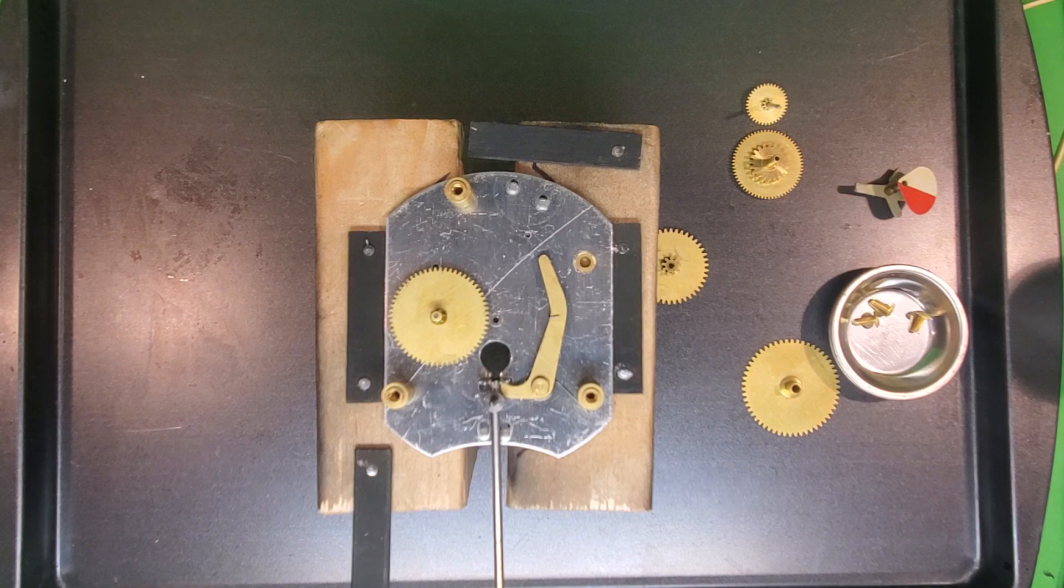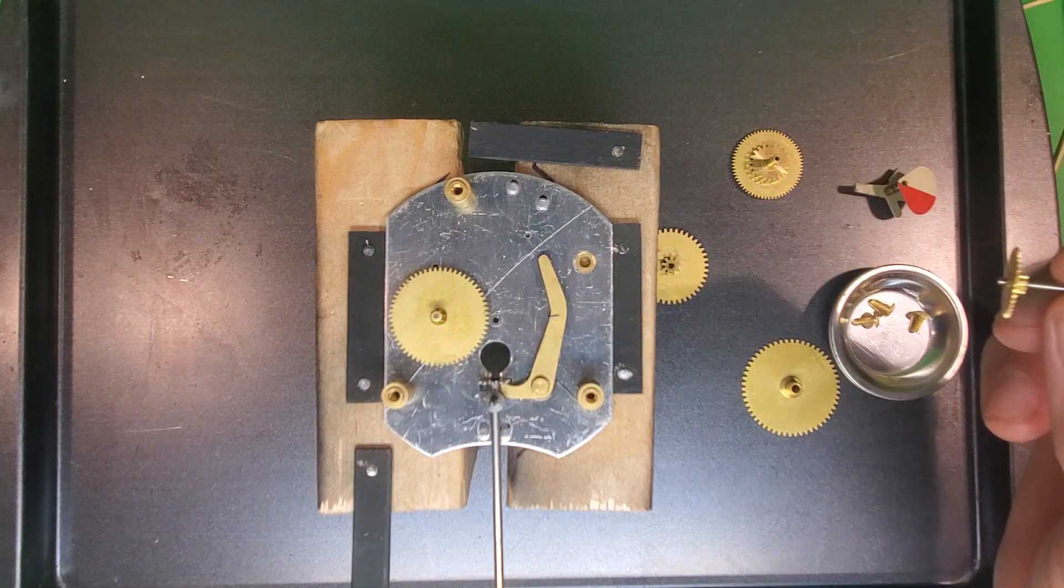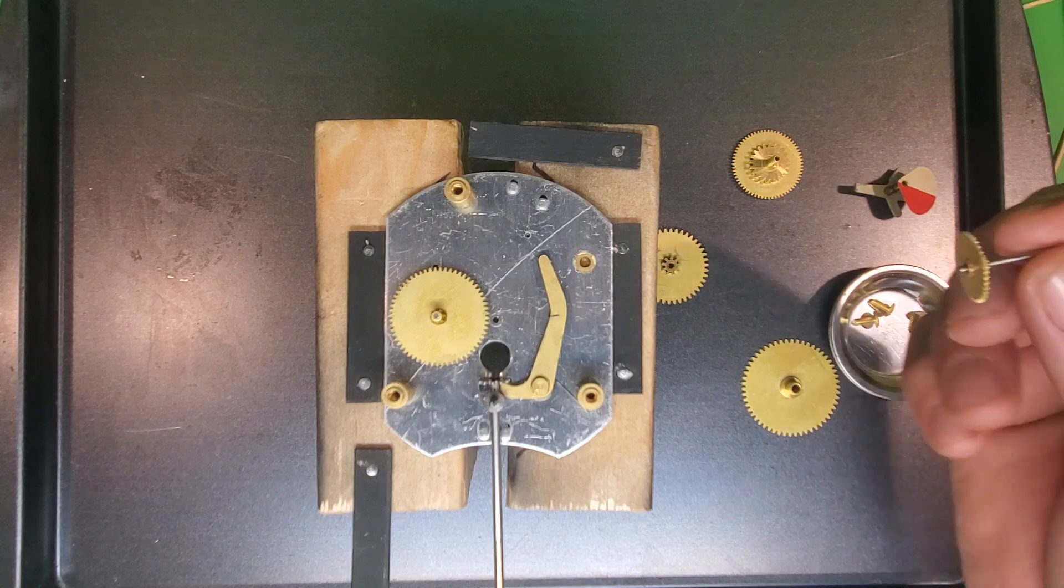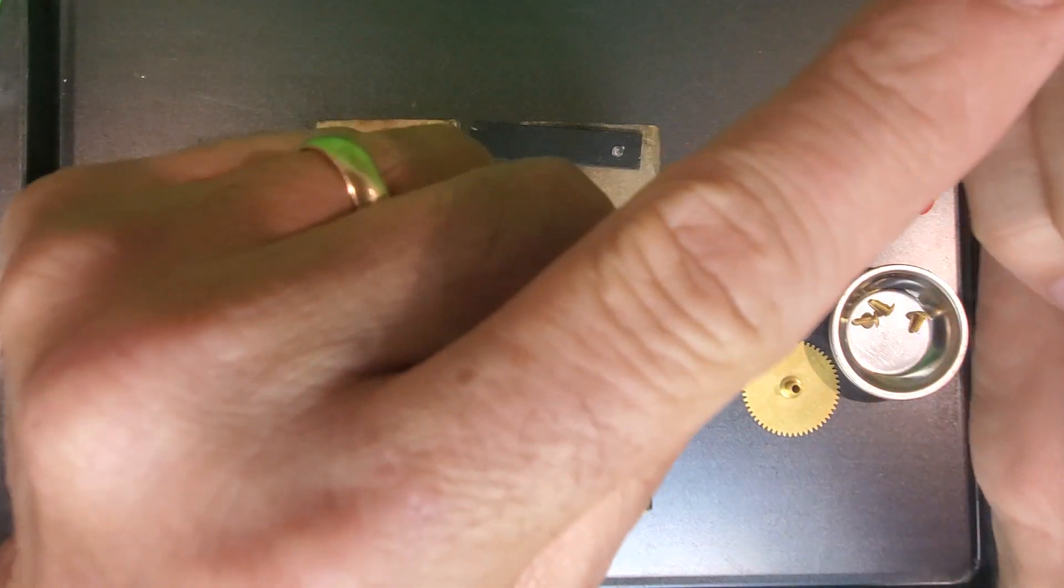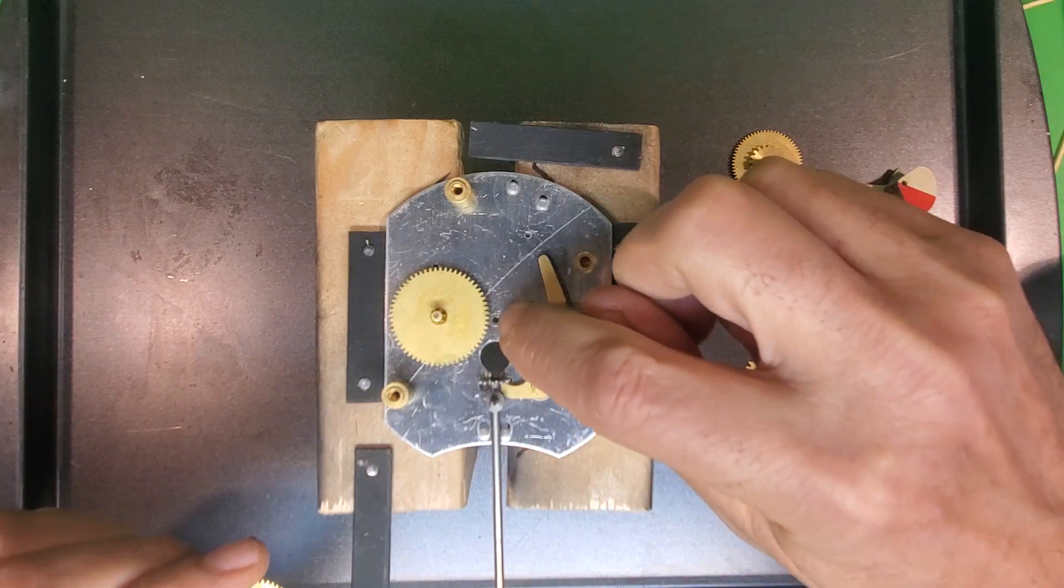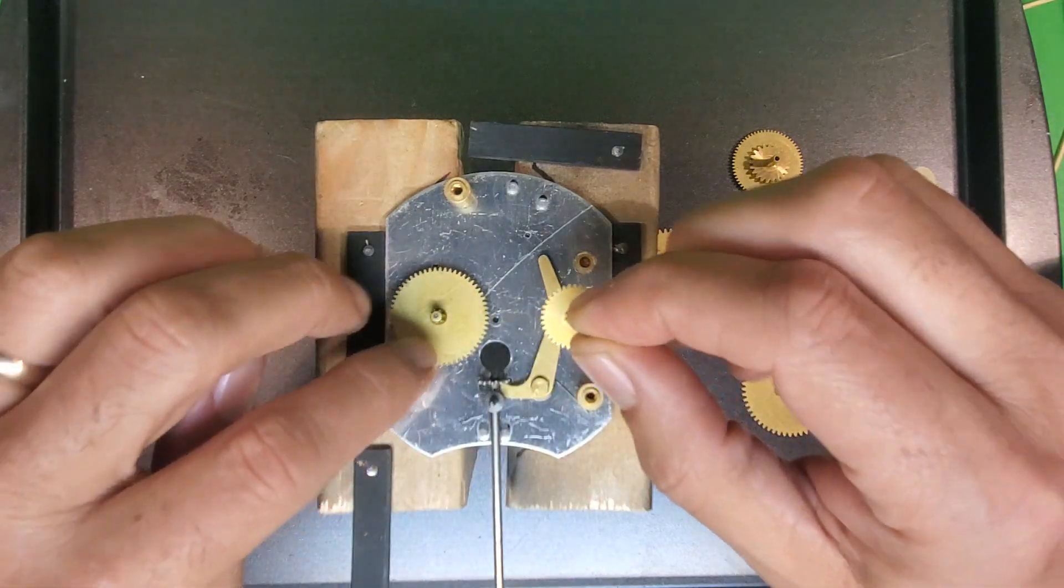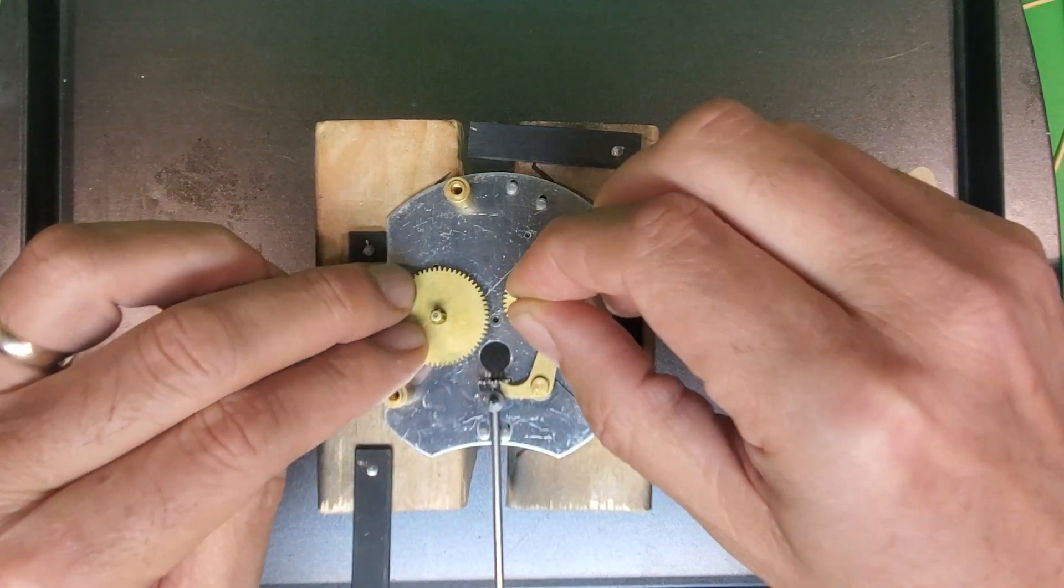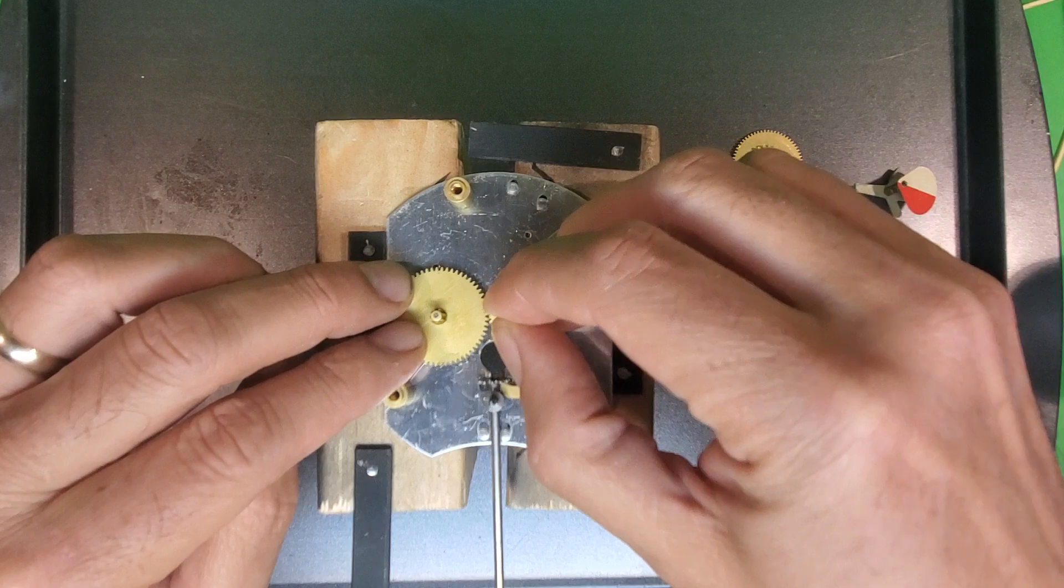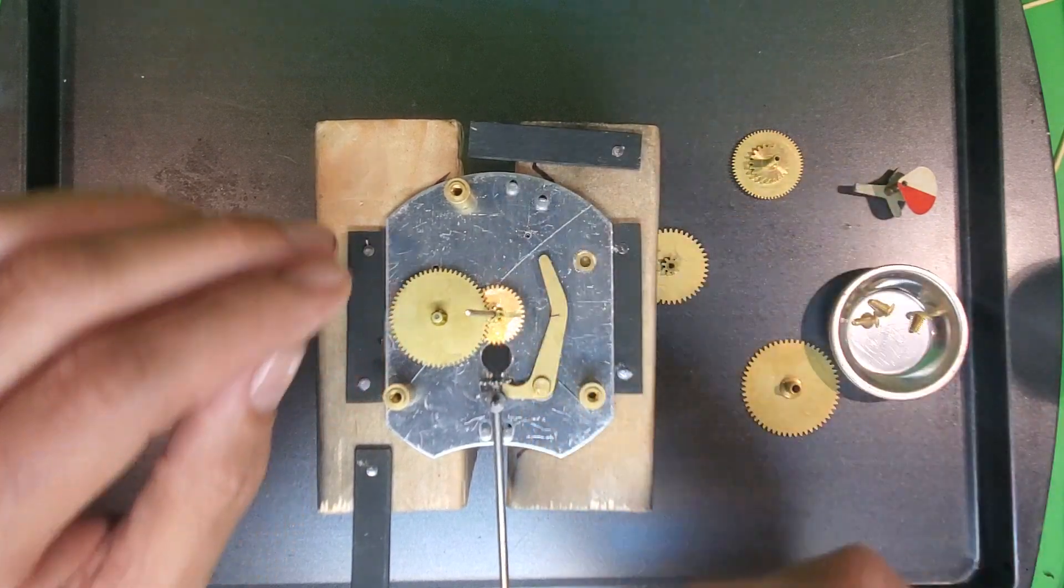We're going to start with what's on the schematic number 6, the sweep second-hand shaft. Now that little nub right there needs to go into that hole right there. And this gear right here needs to go underneath this gear. So what you have to do is kind of hit it from the side and slide it over until that little nub drops down into the hole.